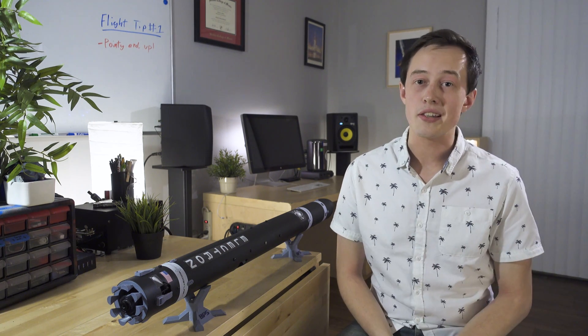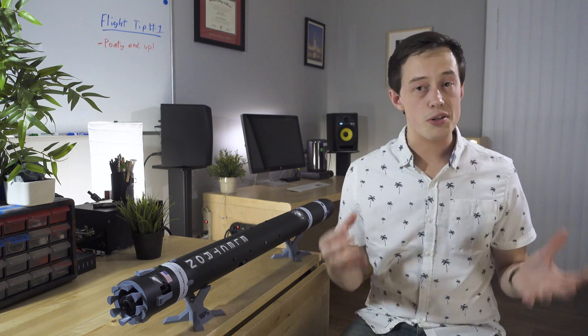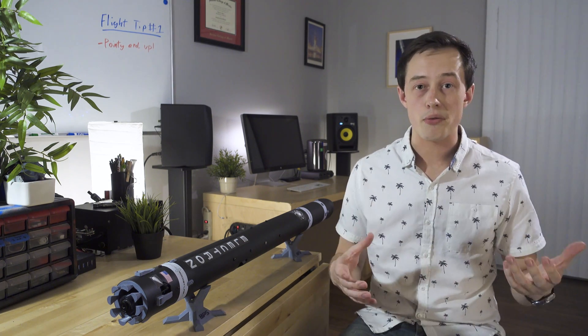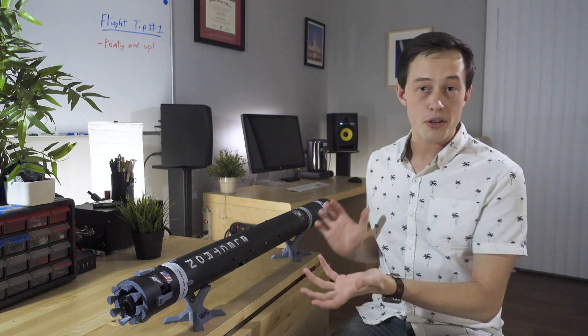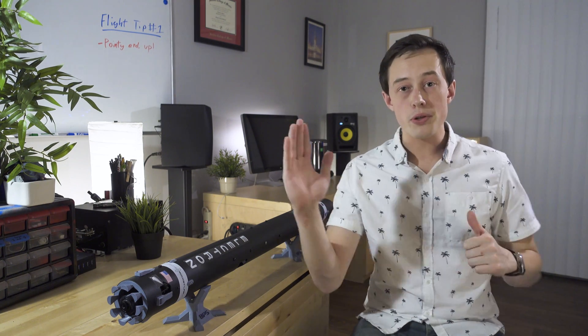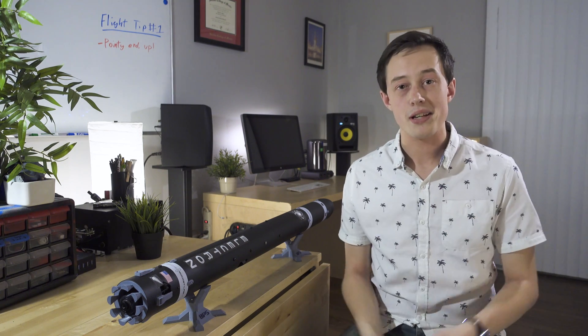Tip number three is to fly in low wind. This is pretty similar to most regular model rockets. You don't want to fly in really high wind because your rocket could get blown out of control, especially for finned model rockets because they could turn into the wind. This won't happen with your thrust vector control system, but it will drift horizontally, so you do want to minimize that.